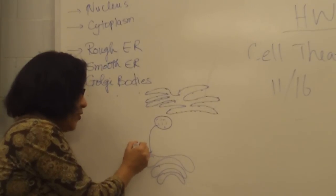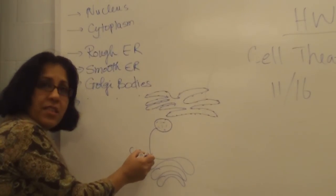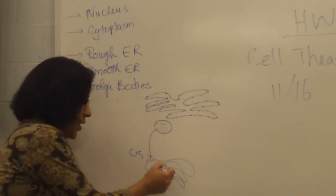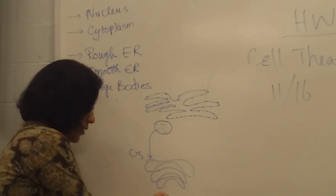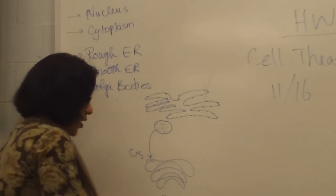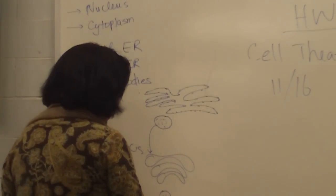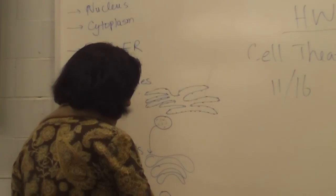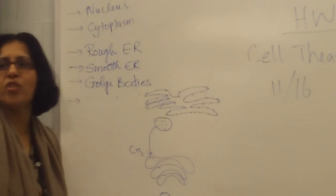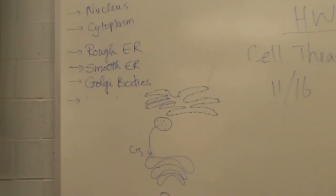So it will fuse on this side. Then the vesicle will go through and it comes out from the trans side. Very good. So now it is modified protein. Let's say it's a lysosome. What is the role of a lysosome?